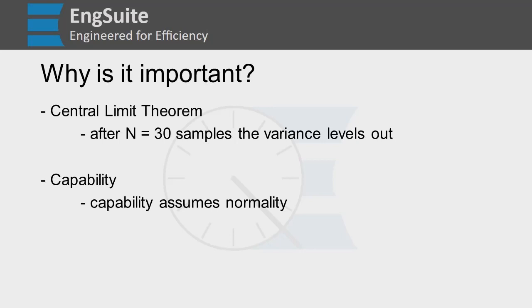Okay. The second main reason is capability, because capability assumes normality. Capability really is the measure of whether or not your product can produce parts that are in spec.